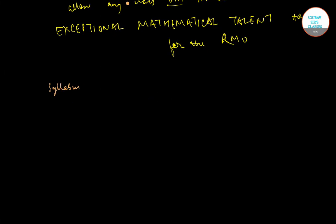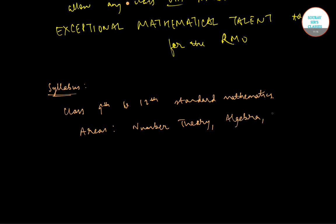The syllabus for the exam, for the RMO and for all the stages, is class 9th to 12th standard mathematics. The typical areas of problems are number theory, algebra, geometry, and combinatorics. The syllabus does not include statistics and calculus.